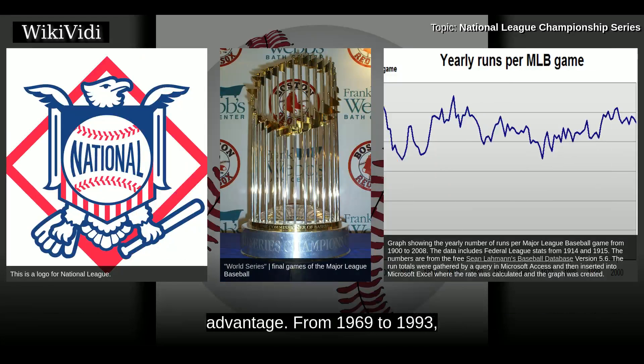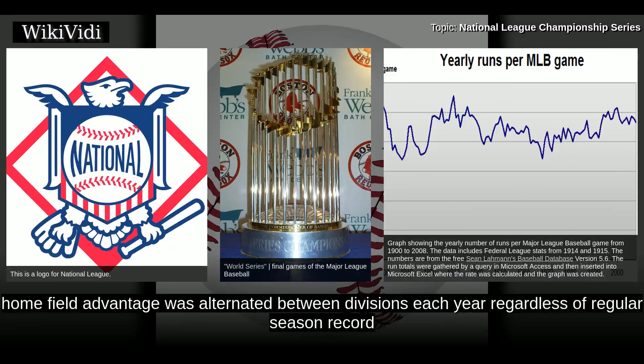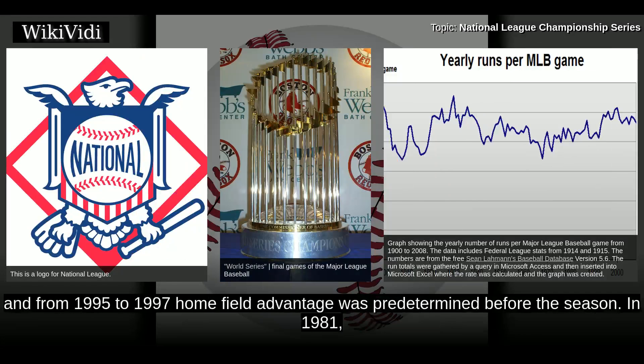From 1969 to 1993, home field advantage was alternated between divisions each year regardless of regular season record. And from 1995 to 1997, home field advantage was predetermined before the season.